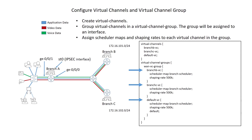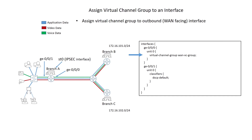Based on this configuration, there are three channels in the group: branch B-VC, branch C-VC, and default VC. The combined shaping rates of all three channels is 1.5 megabits per second, so that is the most that will be transmitted out the interface. Once a channel hits its shaping rate, the channel begins to be congested and traffic begins to buffer in the queues. The virtual channel group is applied to an interface just as a scheduler map would normally be applied.